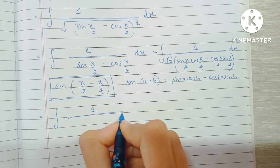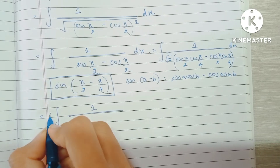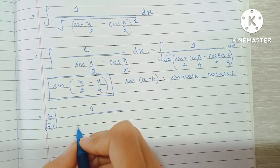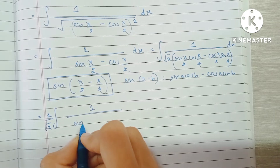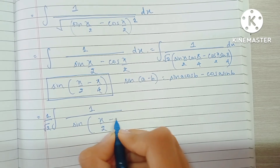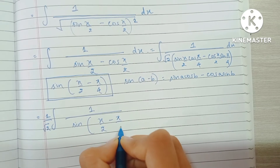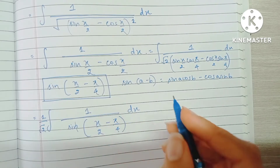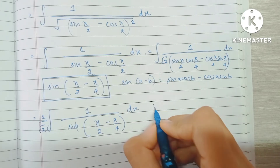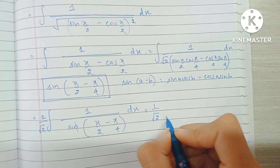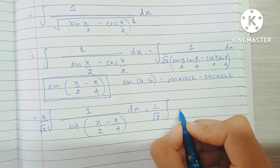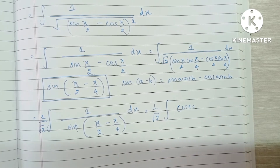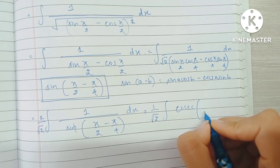We have 1 over the expression; taking the 1/√2 outside as a constant, the new denominator becomes sine(x/2 minus π/4). Taking the reciprocal of this fraction, we convert it into cosec, since cosec is the reciprocal of sine. So we have cosec(x/2 minus π/4) dx.